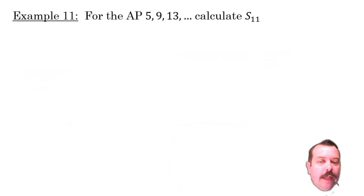Here I have an AP: 5, 9, 13 and so on. And we're asked to calculate the sum to 11 terms. In this instance, it's fairly easy to see that the first term a is 5 and the common difference is 4. They're increasing by 4 each time.